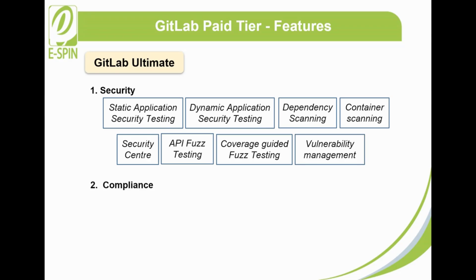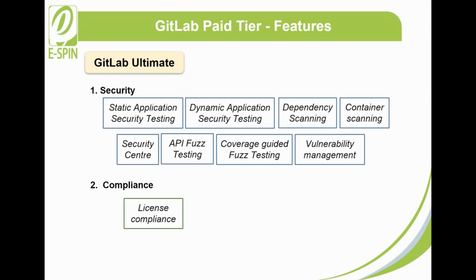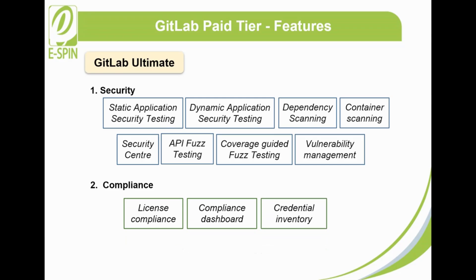2. Compliance. The compliance tools provided by GitLab let you keep an eye on various aspects of your project. These include license compliance, compliance dashboard, and credential inventory (only found in the self-managed version). License compliance identifies new software licenses included in your project, tracks project dependencies, and allows you to approve or deny inclusion of specific licenses. Compliance dashboard gives a high-level view of all projects in the group and approvers for merge requests. Credential inventory allows you to keep track of all credentials, and revoke and delete credentials based on access scope and expiry.